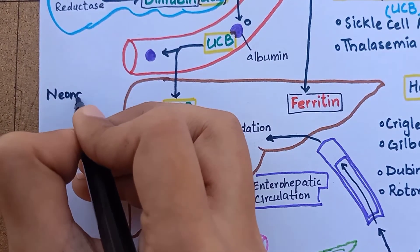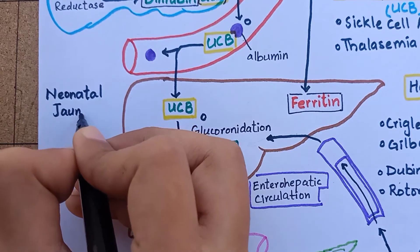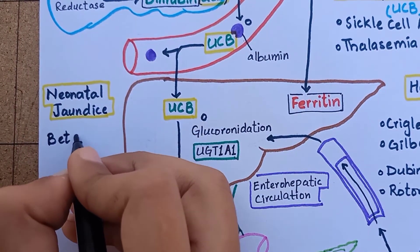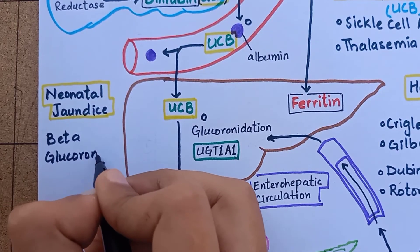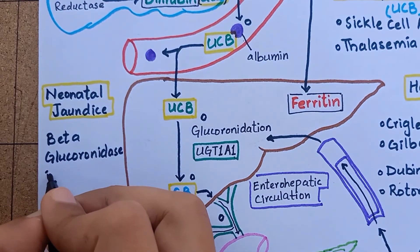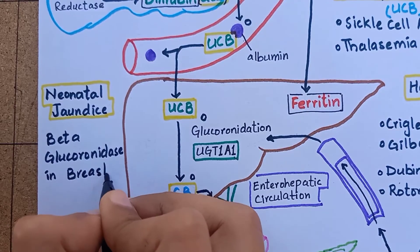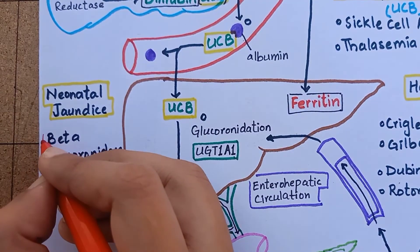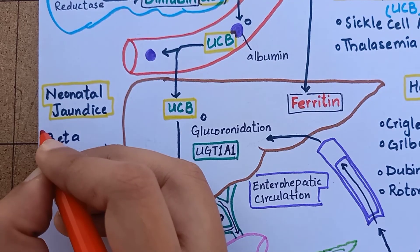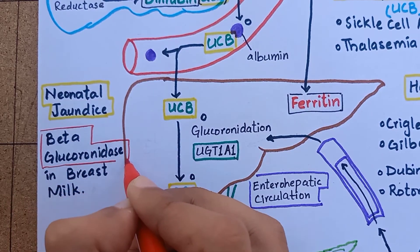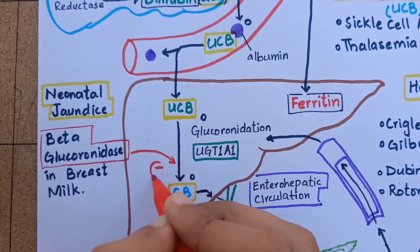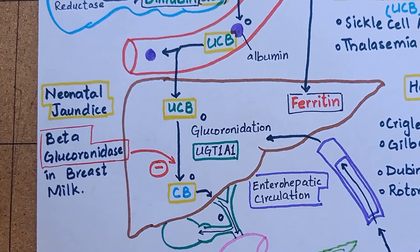Then comes neonatal jaundice. The hepatic machinery for conjugating and excreting bilirubin is not fully mature until two weeks of age and almost every newborn develops mild unconjugated hyperbilirubinemia. This may be exacerbated by breastfeeding because breast milk contains bilirubin deconjugating enzyme called beta-glucuronidase. Therefore, sustained jaundice in newborn is abnormal.